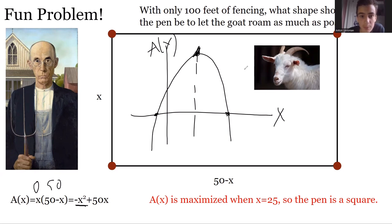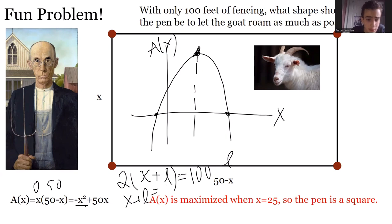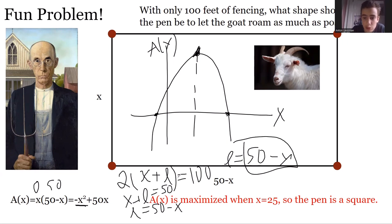Student question: how was it determined that the length is 50 minus x? If x is the width and L is the length, then 2x plus 2L must equal 100 (perimeter is 100), so x plus L equals 50, and therefore L equals 50 minus x.